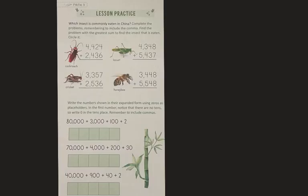At the top of page eight, it asks which insect is commonly eaten in China. Complete the problems, remembering to include the comma. Find the problem with the greatest sum to find the insect that is eaten. Circle it.